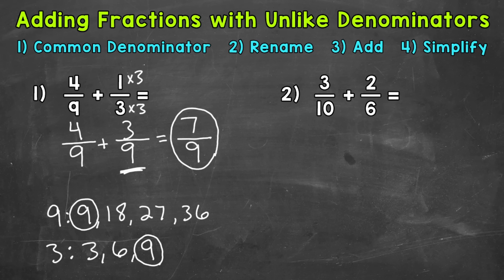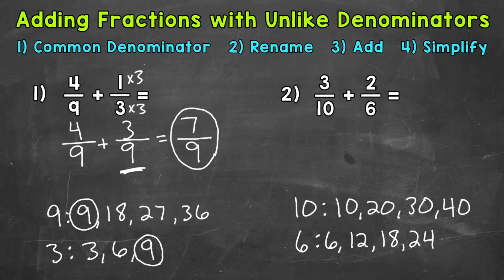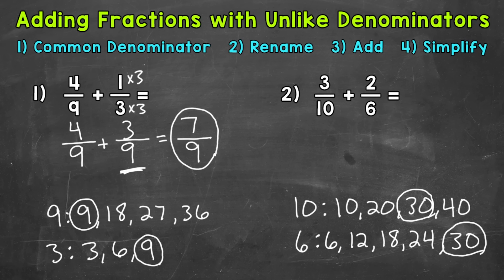Let's try another one and move on to number two, where we have three tenths plus two sixths. The first thing we want to do is find a common denominator, so let's write out the multiples of 10 and 6. We'll start with 10: 10, 20, 30, 40. Now let's do 6: six, 12, 18, 24. We don't have a common multiple, so we can extend our lists. The multiples of 10 are already at 40, and the multiples of 6 are only at 24, so let's extend that list. After 24 would be 30, and now we have a common multiple — specifically the least common multiple. So 30 is going to be our common denominator.